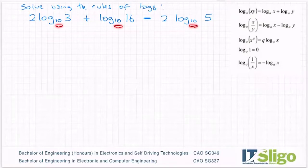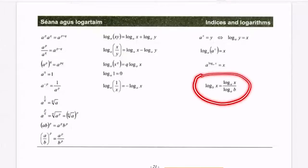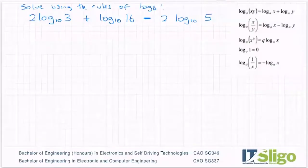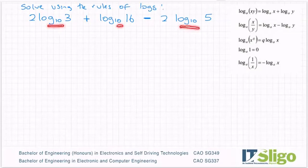Because all of the rules of the logs assume that the base number is the same all the way across. So that's how we manipulate them. It's good, I see log base 10, log base 10, log base 10, so that's happy enough.